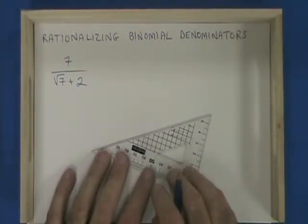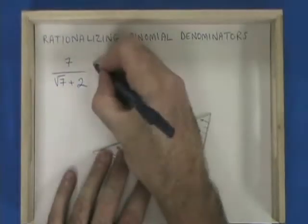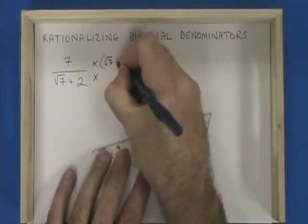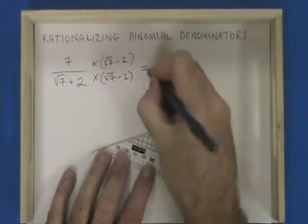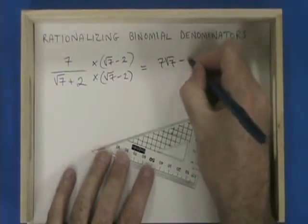Let's look at another example. Here we have root 7 plus 2 in the denominator, so we are multiplying both top and bottom by root 7 minus 2. The top gives us 7 root 7 minus 14.